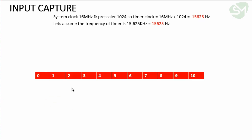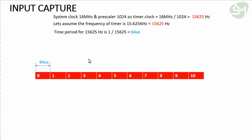When the timer starts, it starts counting from zero and counts up. The time period of the timer is given by the inverse of 15625, that is 64 microseconds. This time period is the time taken for one tick of the timer — for each count, the timer takes 64 microseconds. That is, for counting from 0 to 1 it takes 64 microseconds, and similarly for each subsequent count.